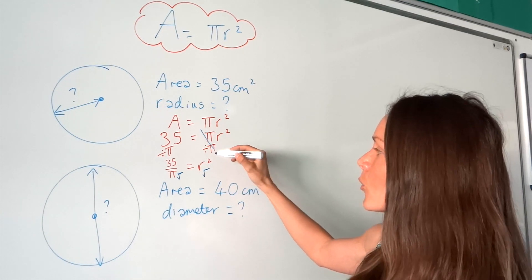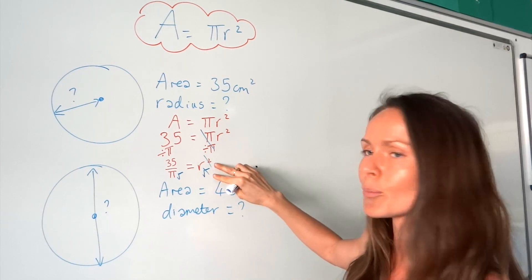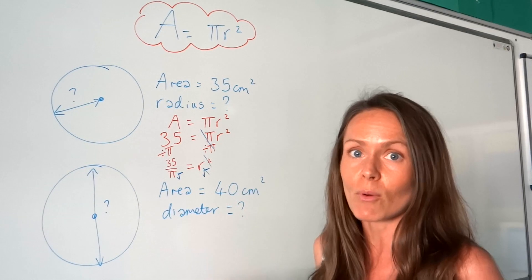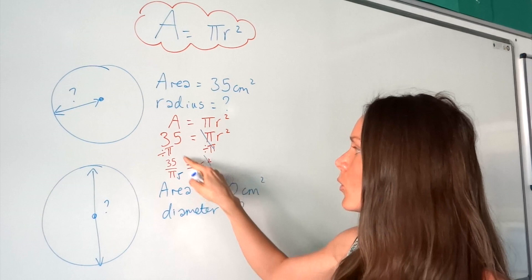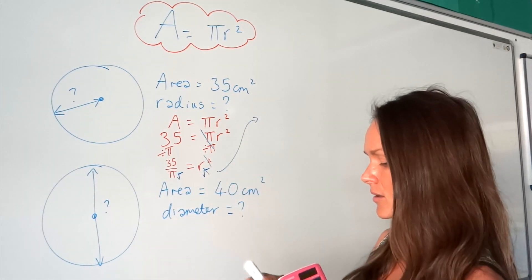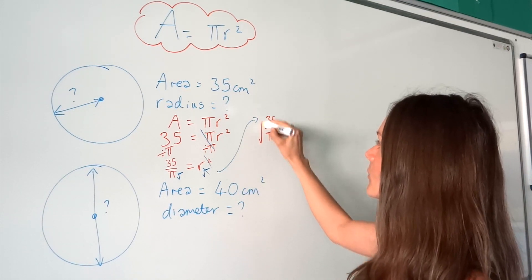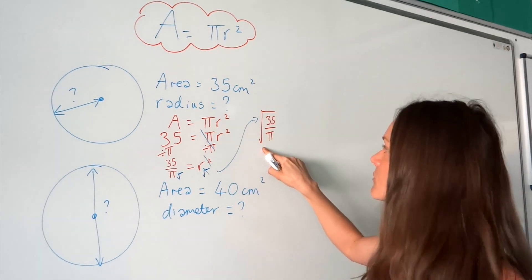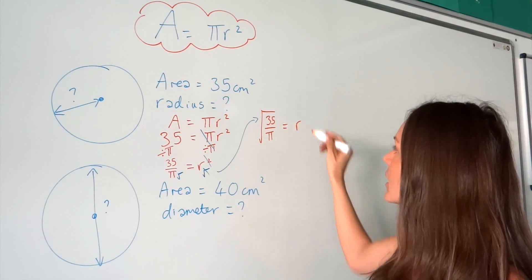When you square root a square, they just cancel each other out, because whenever you do the opposite they cancel. So on the right-hand side I'm left with r, which is what we need — that's what we're trying to find. And on the left-hand side, I have to square root all of this fraction. So we had 35 divided by pi already, and now I'm going to square root all of that fraction. Make sure the square root goes around all of this, and not just the 35, and that will give me r.